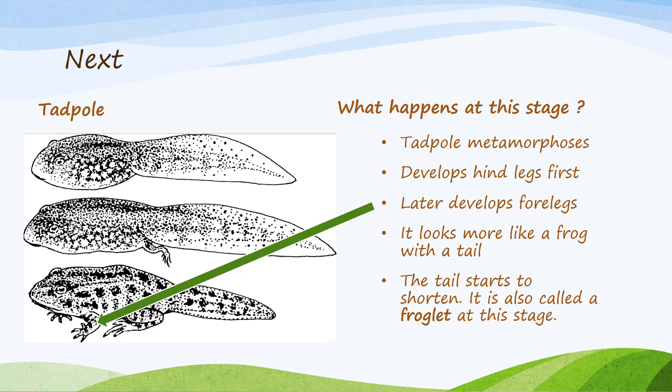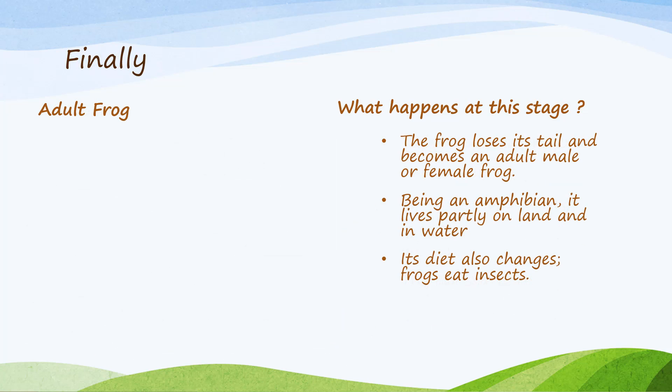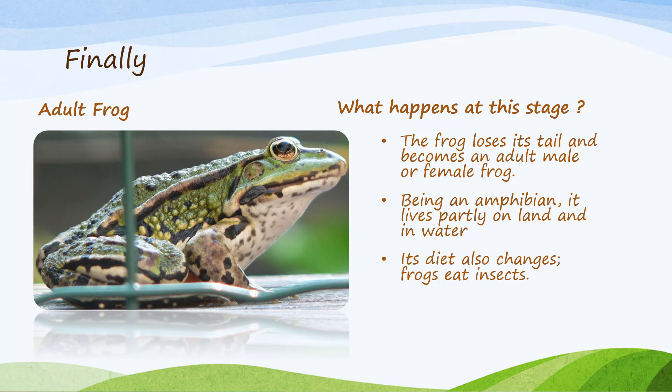And finally: the adult frog. What happens at this stage? The frog loses its tail and becomes an adult male or female frog. Being an amphibian, it lives partly on land and partly in water. Its diet also changes — frogs eat insects.